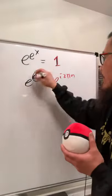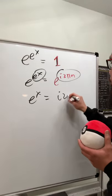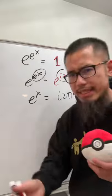And now you see the exponents have to equal each other, so we have e to the x is equal to i pi n like this, and now we can take the ln on both sides.